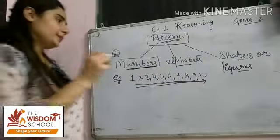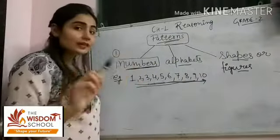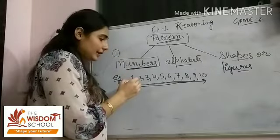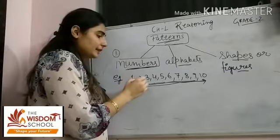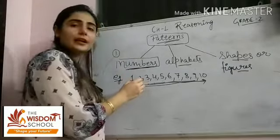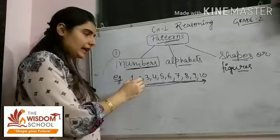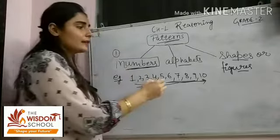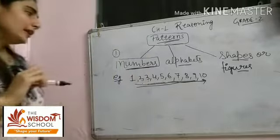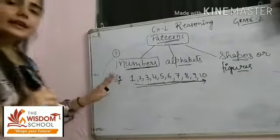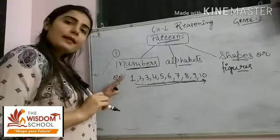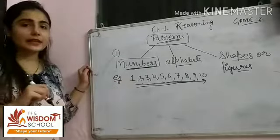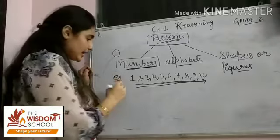Because yahan humne counting ko line wise likha hai. Humne beech mein ek bhi number ko skip nahin kiya — like you can see here, 1 ke baad directly humne 2 likha hai, 2 ke baad directly 3 likha hai, and so on. So yeh bachon ek example hai patterns ka. Ab hum bachon baat karenge doosre example ki.